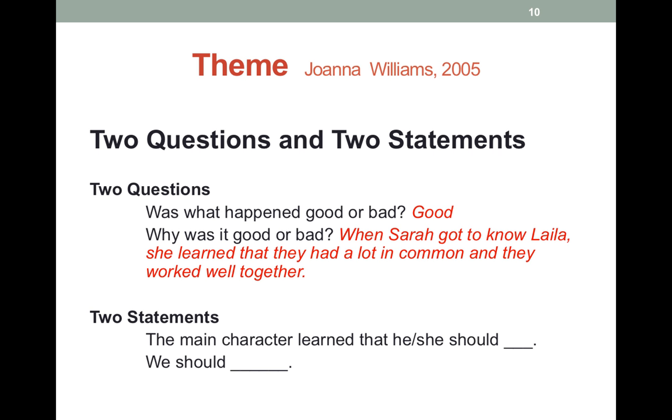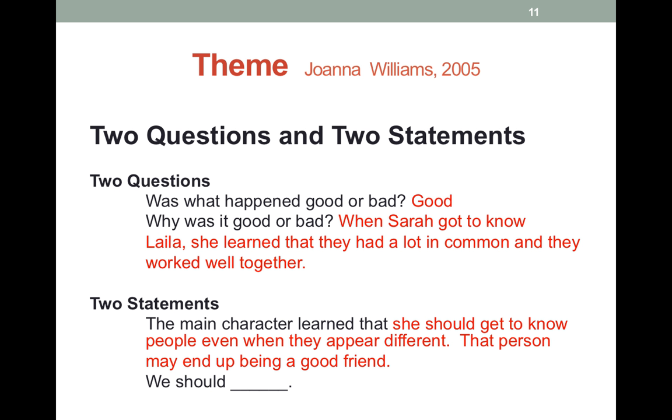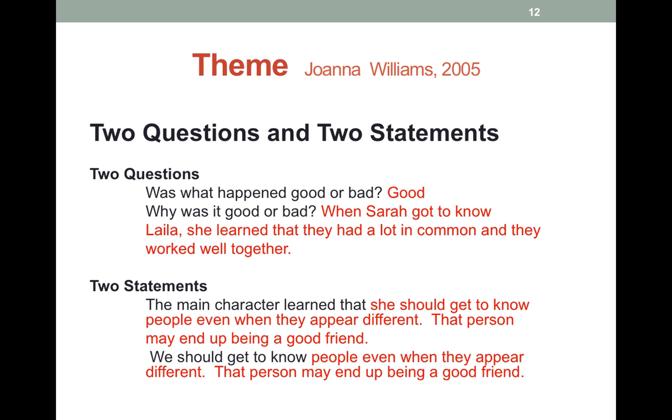Two statements. The main character learned that he or she should - she should get to know people even when they appear different. That person may end up being a good friend. And we should in our own lives. This is a time for us to tell what we do, what lesson we can learn. Well, that we should get to know people even when they appear different. That person may end up being a good friend. So it helped us get to the theme in those four easy steps.